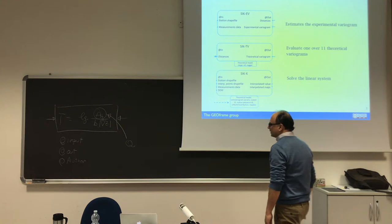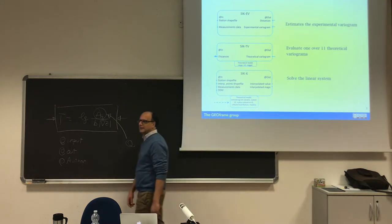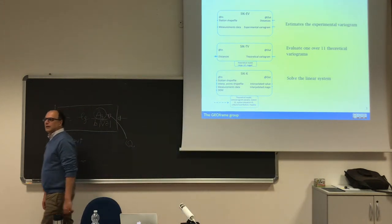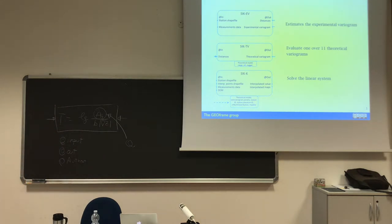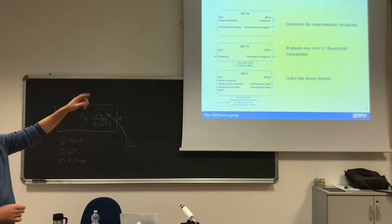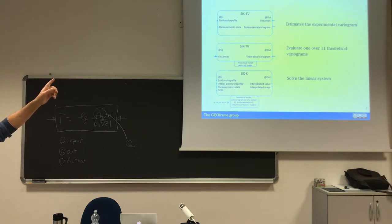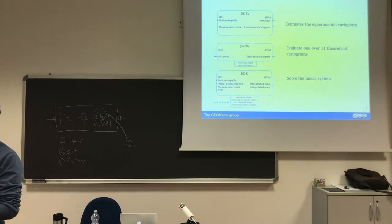There we have SICK-TV, which is not an Indian television. It is just a component that has in its core 11 models of variograms. So you can understand that you come in with the distances that come out from SICK, and you go out with the theoretical semi-variogram.